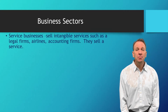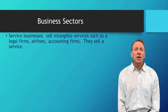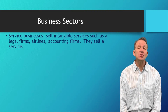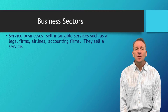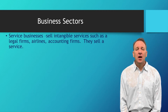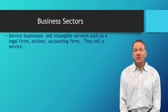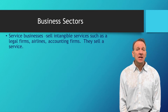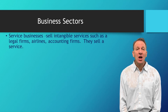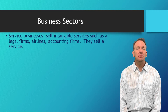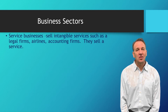Now let's take a look at the different types of business sectors. We're going to look at three very common types. The first is the service business — these businesses sell an intangible item. Examples are legal firms, accounting firms, and airlines. They sell a service to the public and typically do not have inventory, as their main business is to sell a service rather than a product.